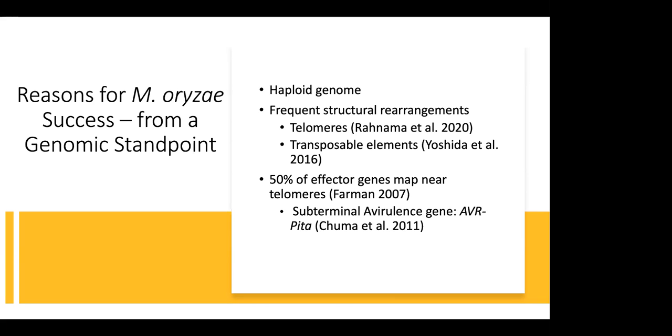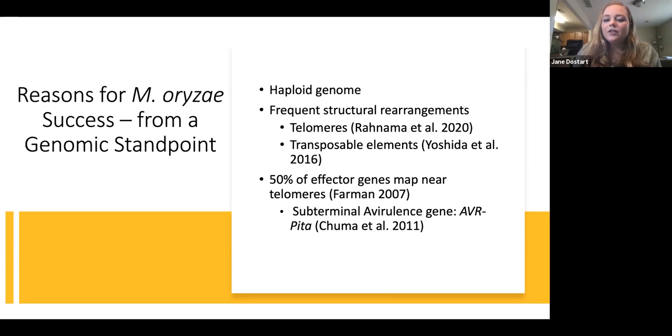Notably, about 50% of effector genes map near telomeres. Effector genes are those that are involved in infection. And actually, I should say 50% of avirulence genes. And avirulence genes are essentially markers that can serve as flags to the host plant that is being infected with that fungus. So it's beneficial to the fungus then to have these frequent mutations that arise. So it's therefore unrecognizable. And we also see in some strains that we've had avirulence genes that are completely lost that helps with host specificity as well.